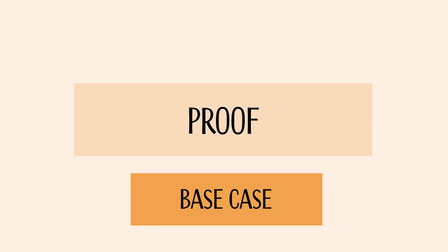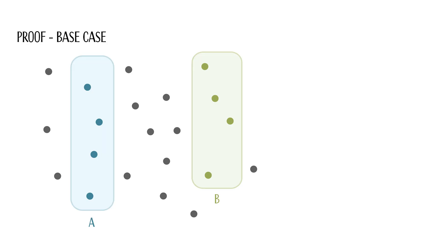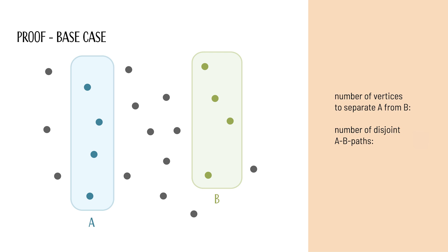Let's start with the base case. We consider a graph with no edges, where A and B do not share any vertices. In this case, A and B are already separated. We need to remove zero vertices to separate A from B, and there are zero disjoint AB paths. Thus, Menger's theorem holds for this case.